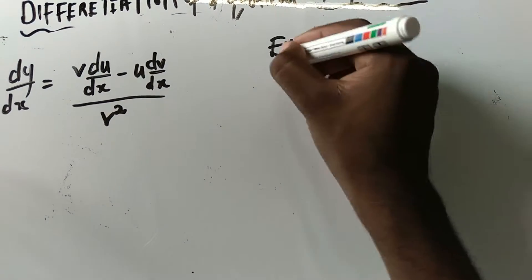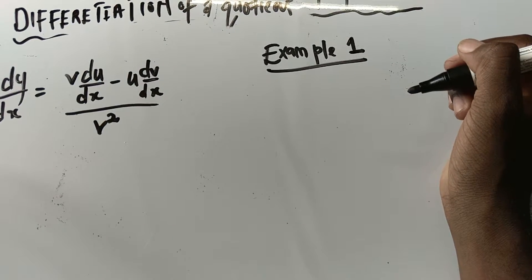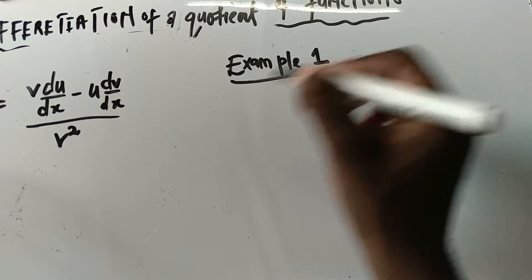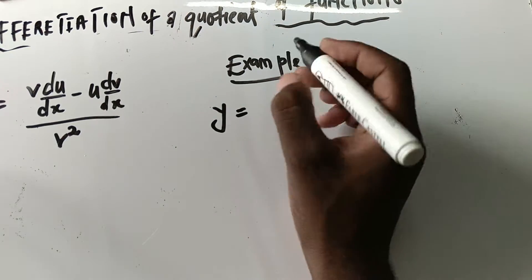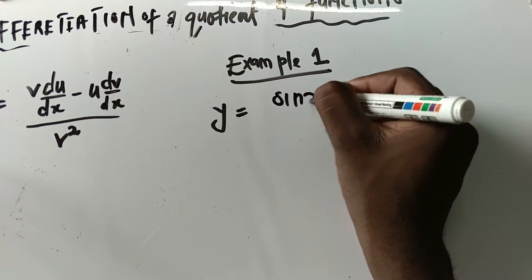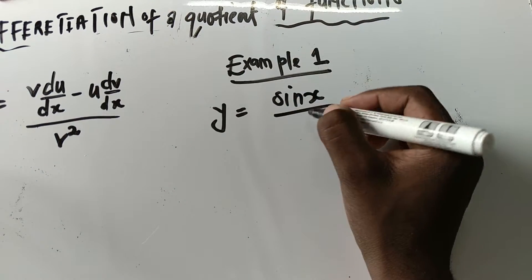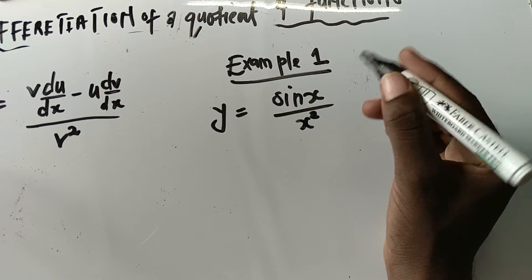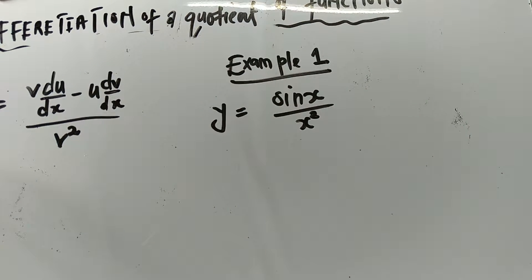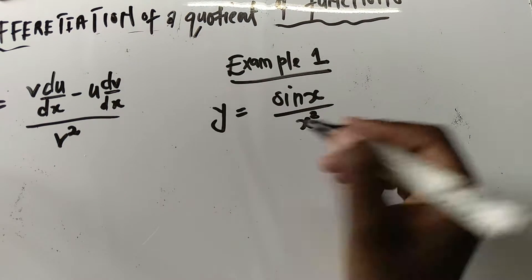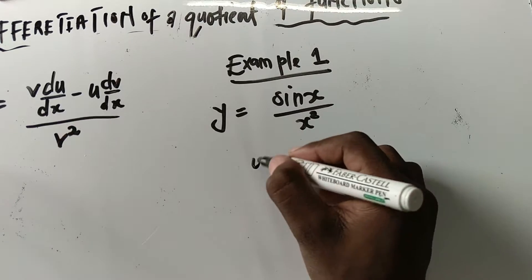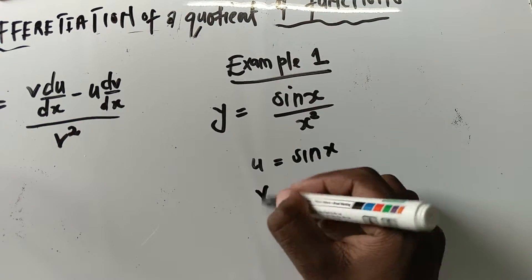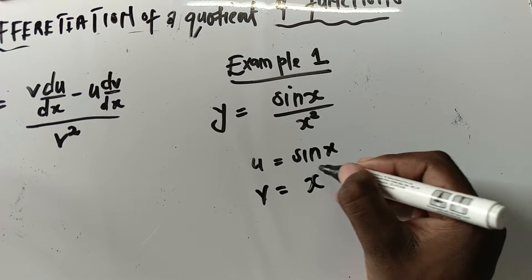Example number one: y equals sin(x) divided by x squared. So what is our u here? u is sin(x), and v is x squared.